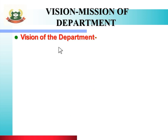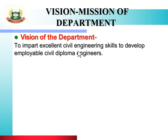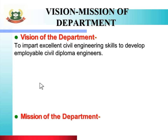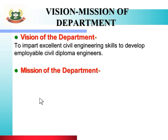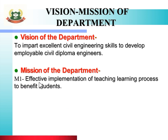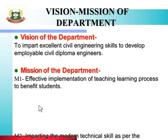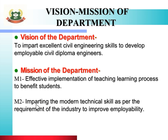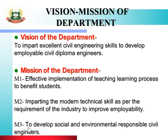First, let us see the Vision and Mission of the Department. Vision of the Department: To impart excellent Civil Engineering skills to develop employable Civil Diploma Engineers. Mission of the Department — there are three missions: Mission 1 is effective implementation of teaching learning process to benefit students. Mission 2 is imparting modern technical skills as per the requirement of the industry to improve employability. Mission 3 is to develop socially and environmentally responsible civil engineers.